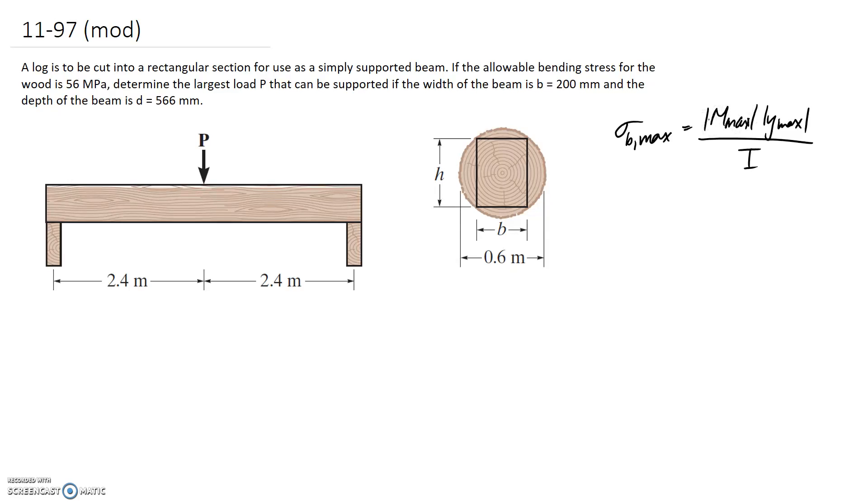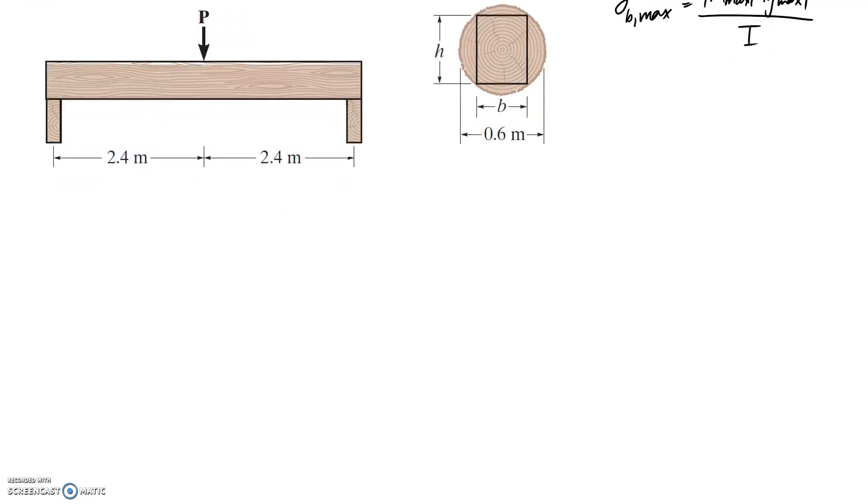This maximum moment is to come from a bending moment diagram which we'll draw in a second, and the other two, y max and I, are going to come from looking at the cross section. So I'm going to start with looking at the moment. Remember that the starting point for this is to draw your free body diagram, find the reactions, then you can draw the shear force and find the bending moment diagram to read off the maximum moment.